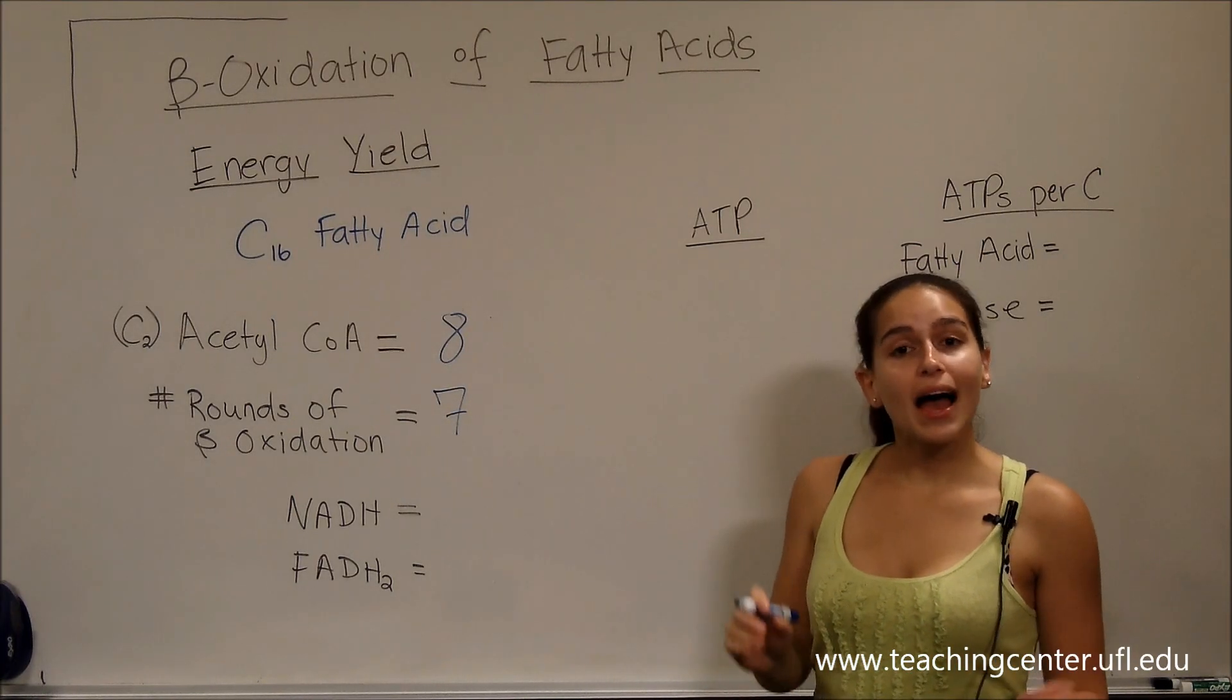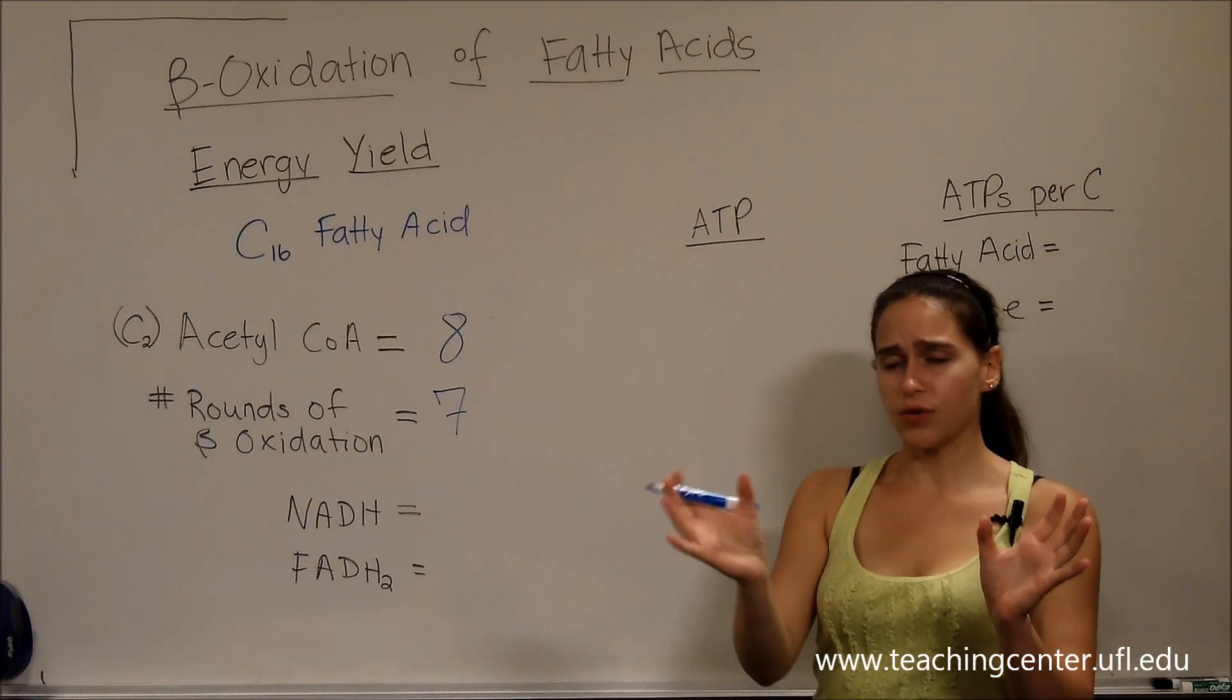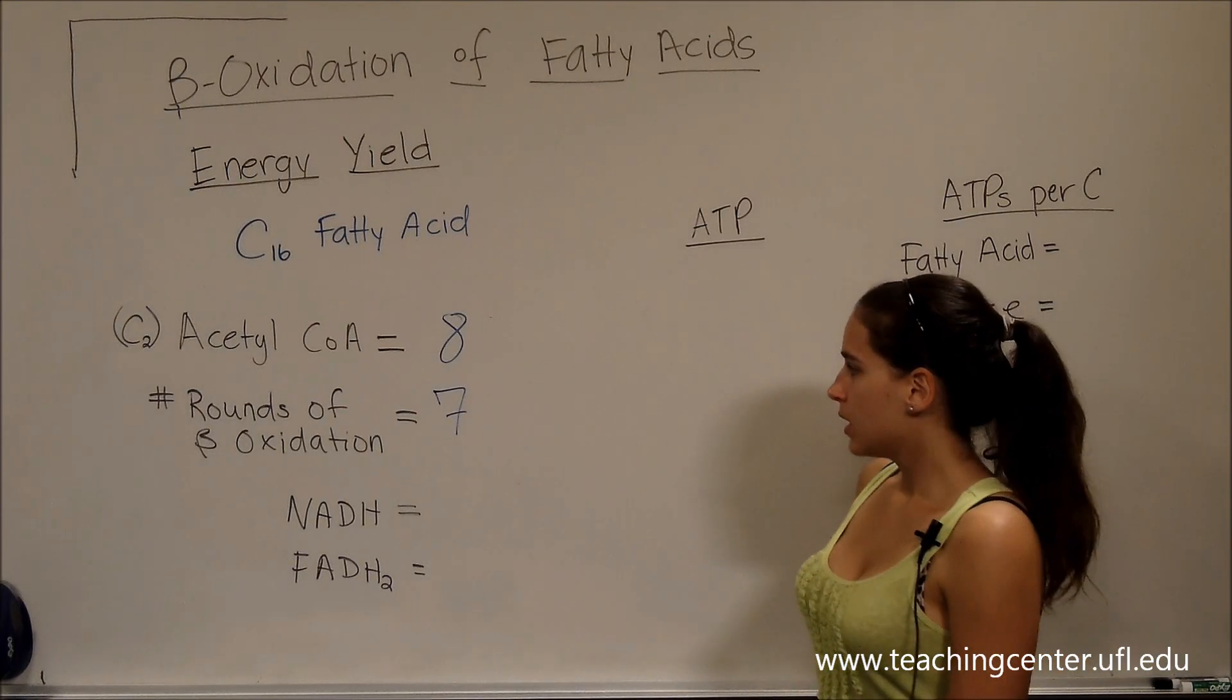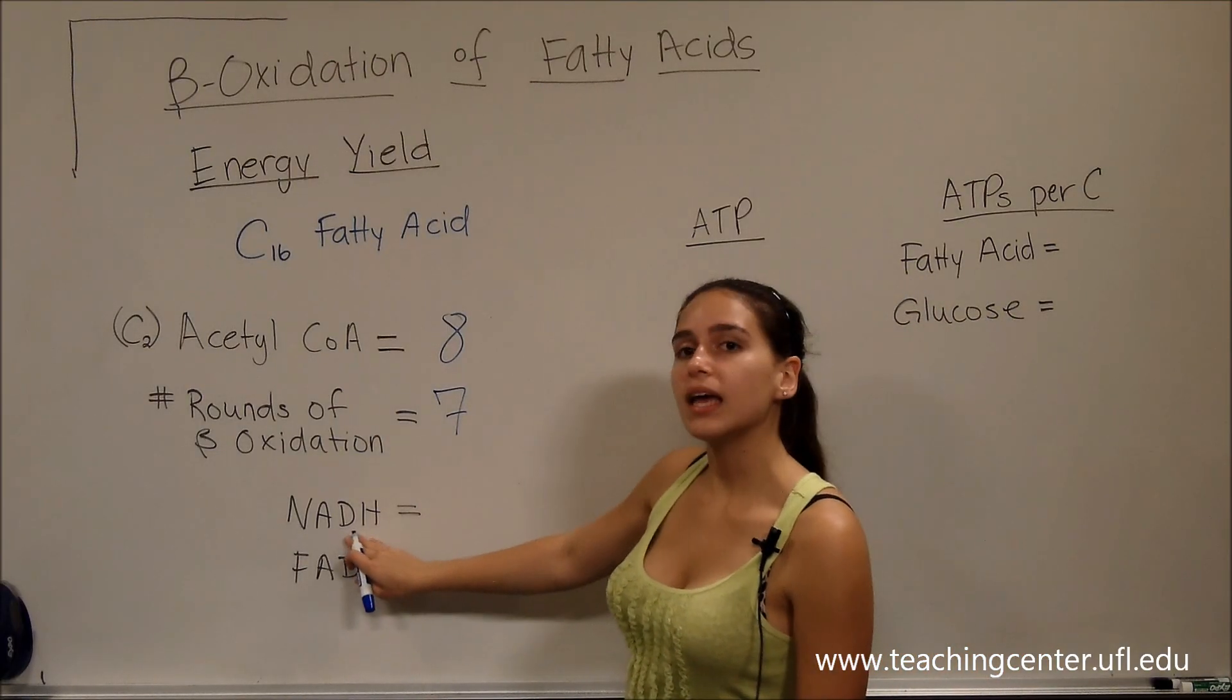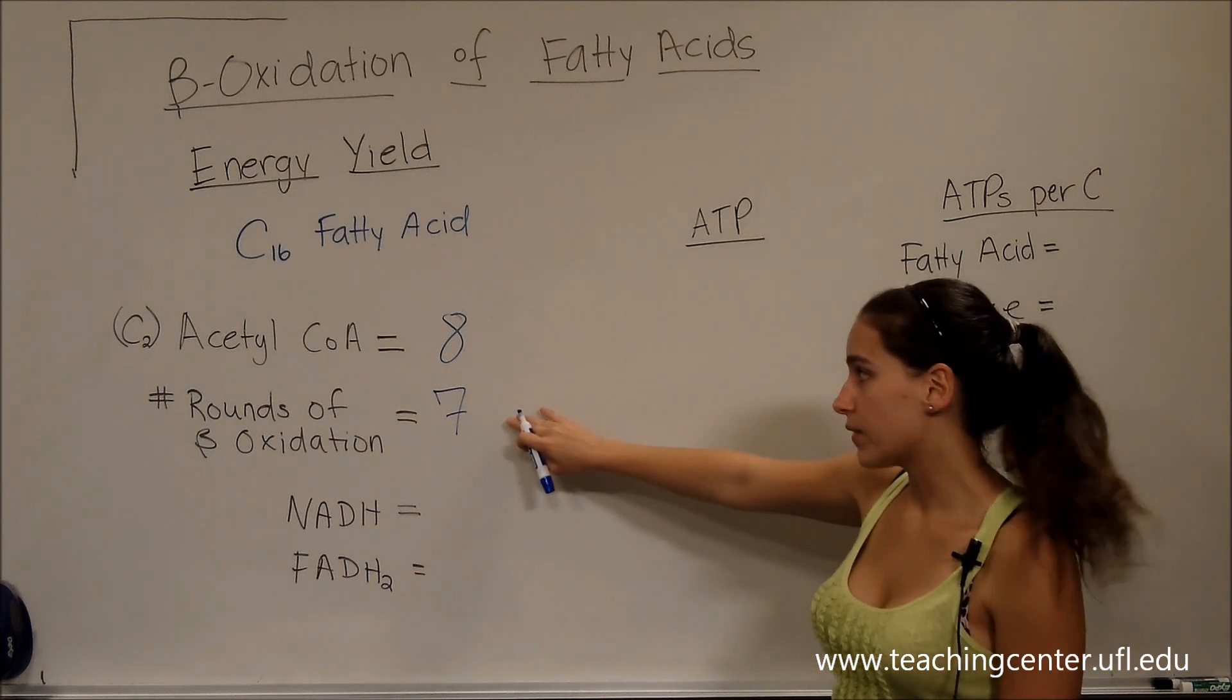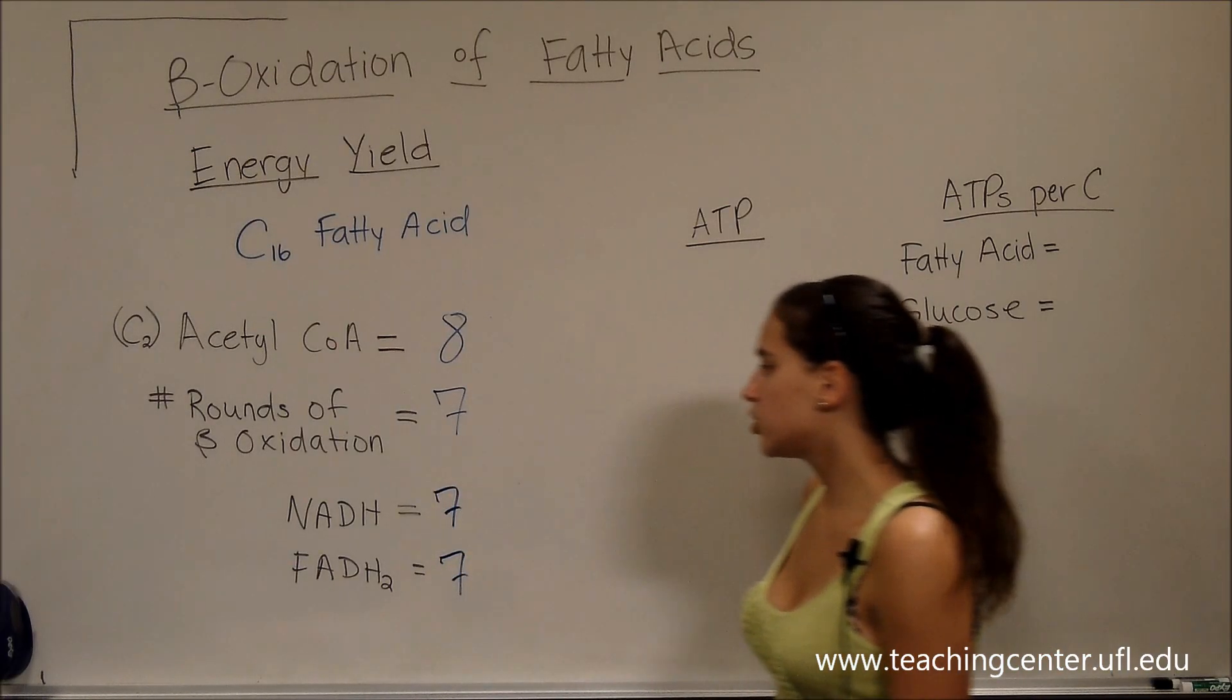Why? Because the last step is just going to be breaking off those two final acetyl-CoA's, and so we don't have to undergo beta oxidation for that final acetyl-CoA or that eighth acetyl-CoA. It's just going to come out of it. And then another little trick is when we're asking how many NADH's and FADH2's we get, we'll just look at the rounds of oxidation. We have seven rounds of oxidation, then we're going to have seven NADH's and seven FADH2's.